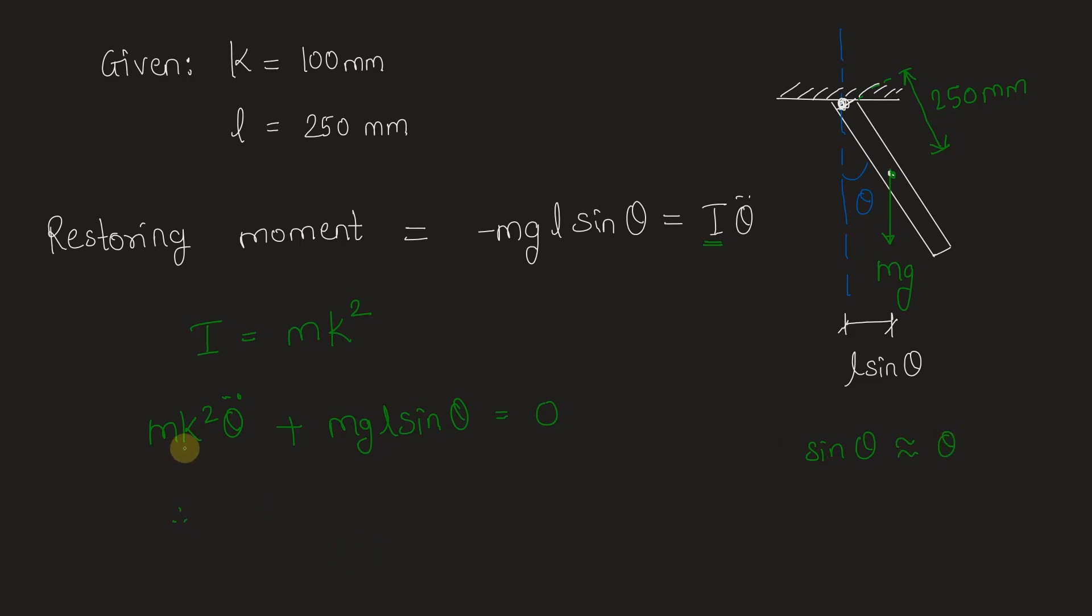Hence we have, taking m common and canceling it out, we have k²θ'' + glθ = 0.